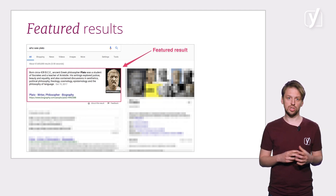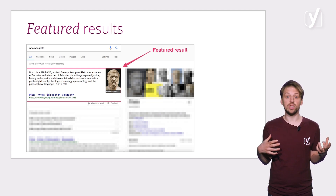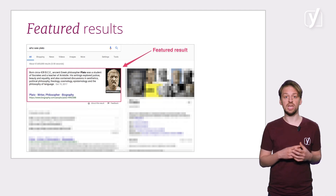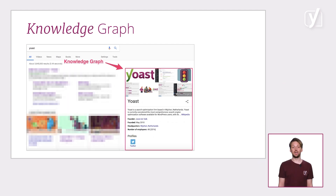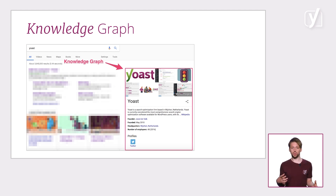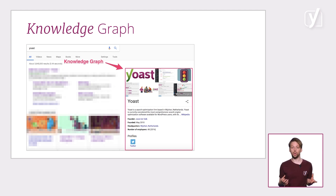If you perform voice search, Google may read out the information in the search results. As voice search is becoming increasingly popular, it's becoming more and more important to aim for featured results. The knowledge graph box appears on the right side of the search results. According to Google, this information is retrieved from many different sources, including the CIA World Factbook and Wikipedia. Like featured results, information from the knowledge graph can be used to answer spoken questions in Google Assistant and Google Home voice queries. We'll go into knowledge graphs in more detail in the module on rich results.